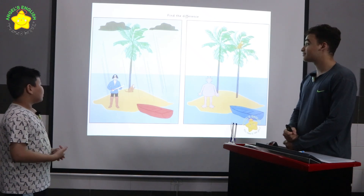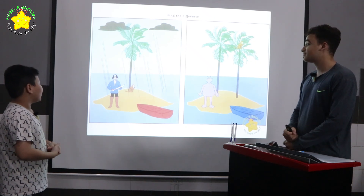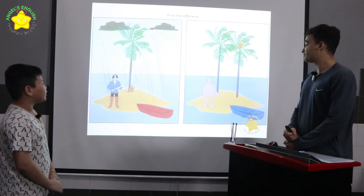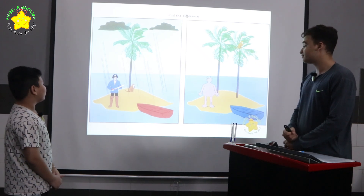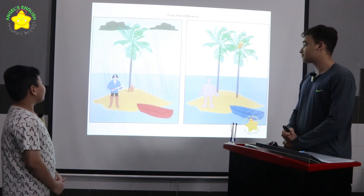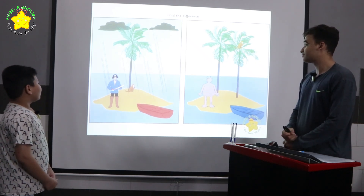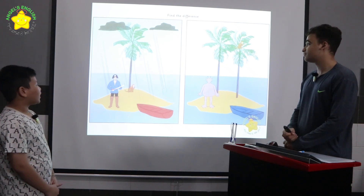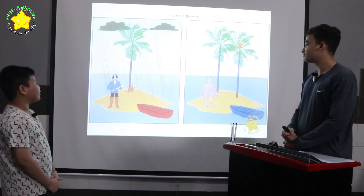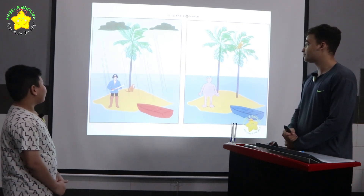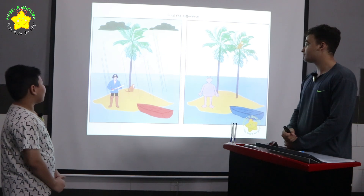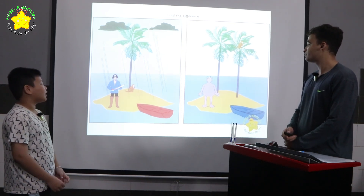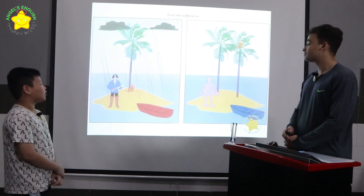In the first picture, the ball is red, but in the second picture, the ball is low. In the first picture, there is one tree, but in the second picture, there are two trees. In the first picture, the monkey is under a tree, but in the second picture, the monkey is on the tree.